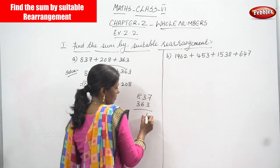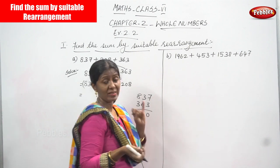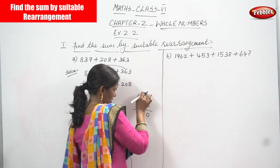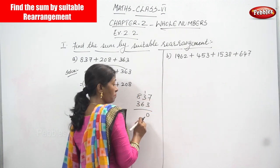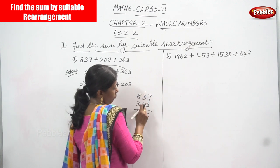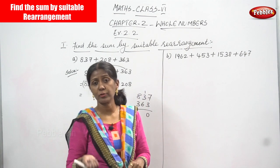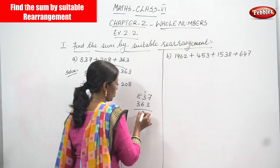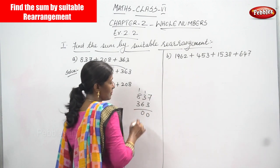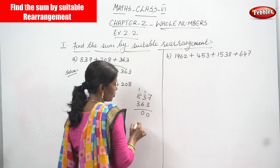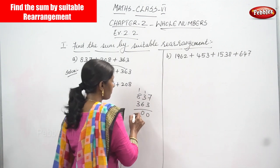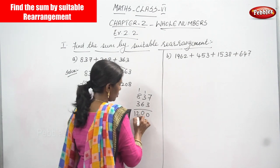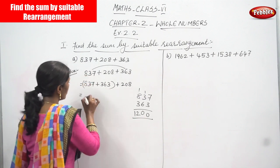Adding 837 plus 363: 7 plus 3 is 10, write 0 and carry over to the tens place. 3 plus 1 is 4, 4 plus 6 is 10, write 0 and carry over to the hundreds place. 8 plus 1 is 9, 9 plus 3 is 12. So the answer is 1200.